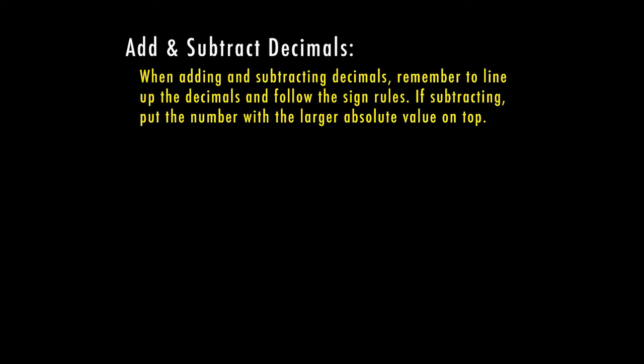So let's go ahead and try a couple of practice problems. First here, we have negative 4.52 plus negative 8.23. If these were both positive, we would just add them together and it would be a positive answer. Since they're both negative, we're actually still going to add these together, but our answer is going to end up being a negative.